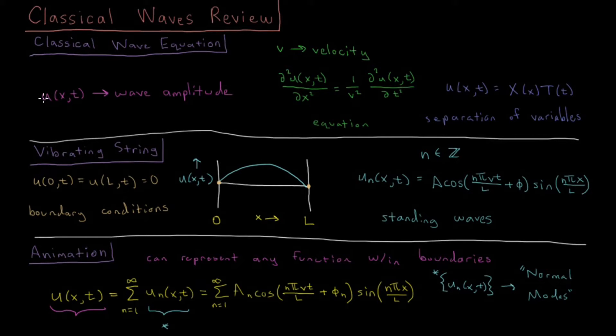For a wave, we're talking about some wave amplitude, this function u. It's a function of x, the spatial coordinate, and t, the time coordinate, just one dimension here in space. It's going to have some velocity that we can choose, v.